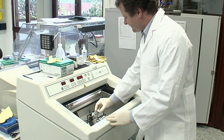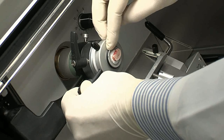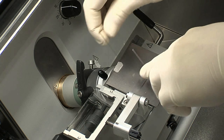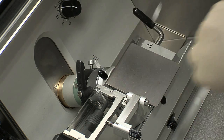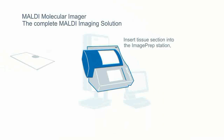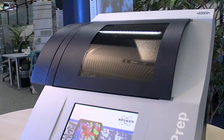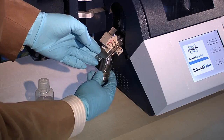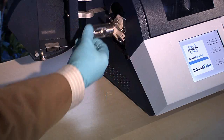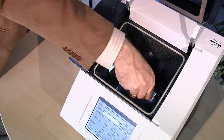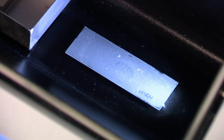Tissue slices are prepared on glass slides according to commonly applied sectioning methods. To prepare the sample for mass spectrometric analysis, the tissue slides are then covered with a matrix in the image prep station by means of a simple push-button process.